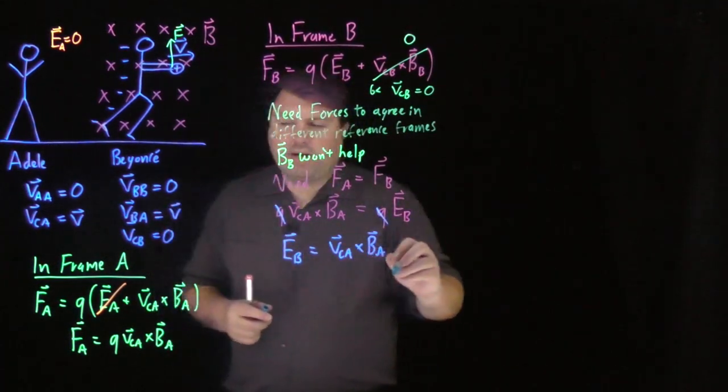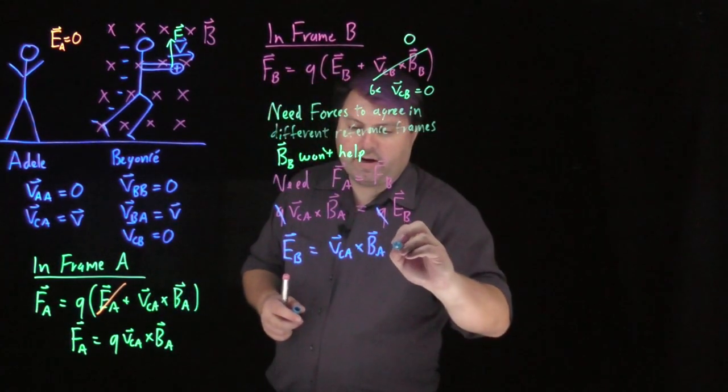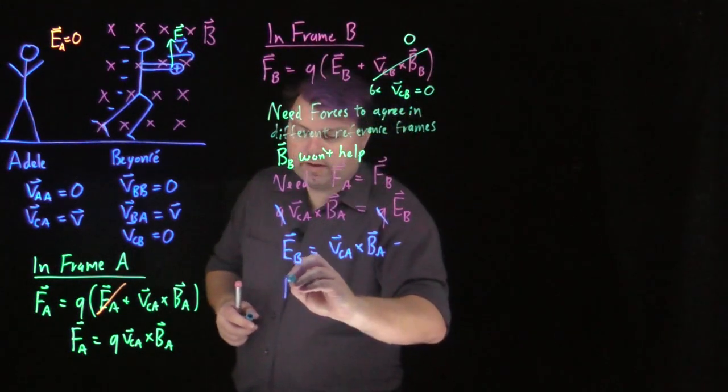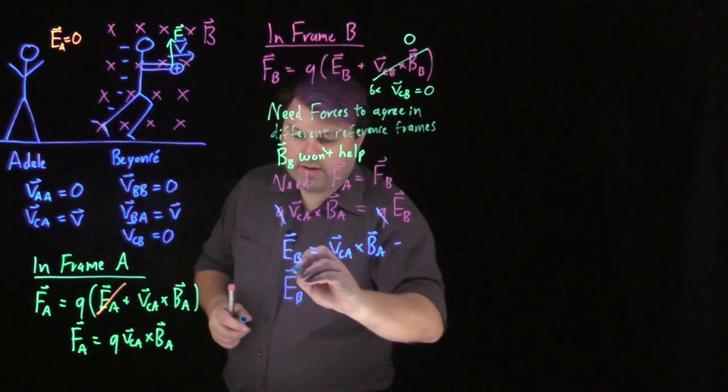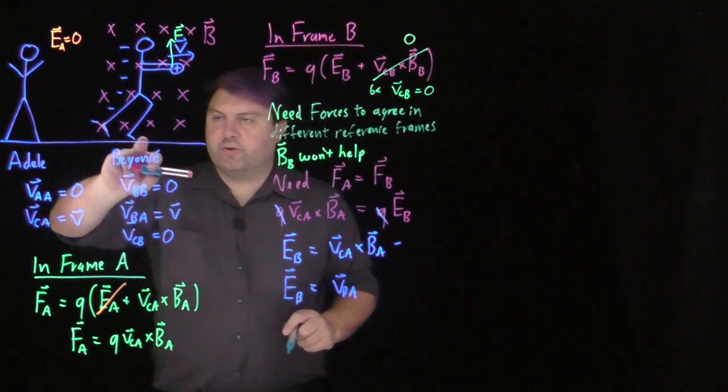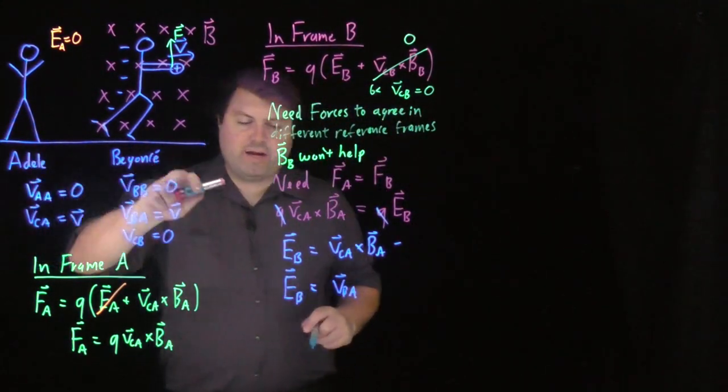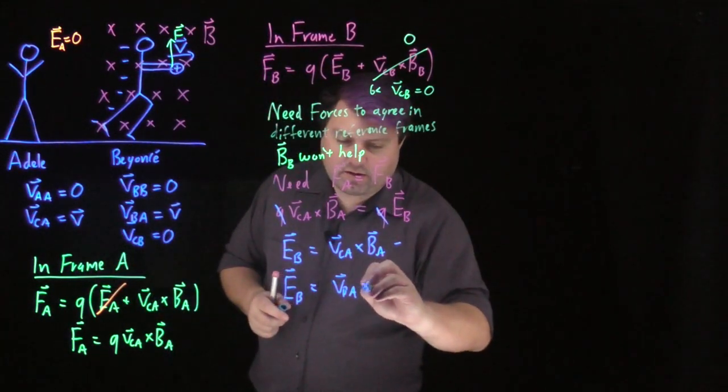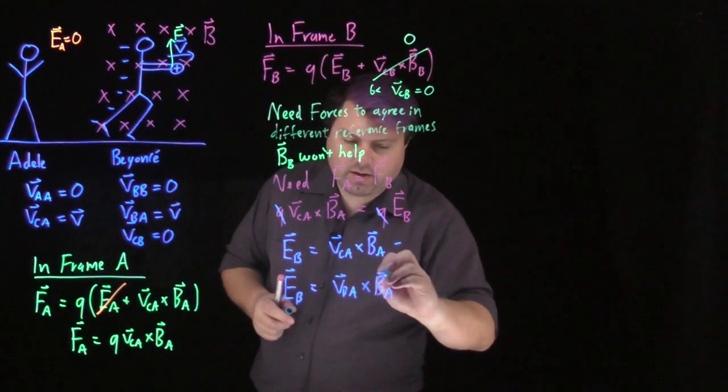VCA is the same as VBA. So we can write it as E sub B is VBA. This is the velocity I need to transform from reference frame A to reference frame B crossed with BA.